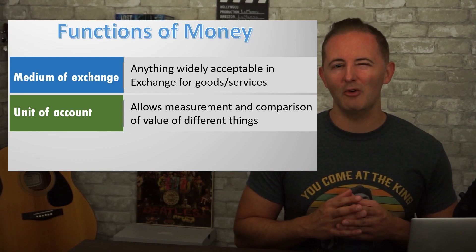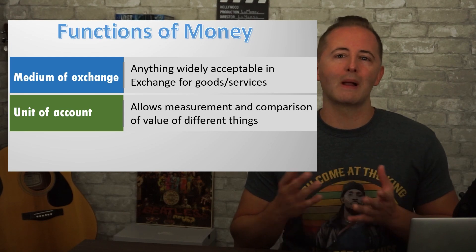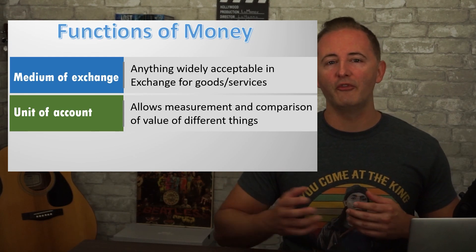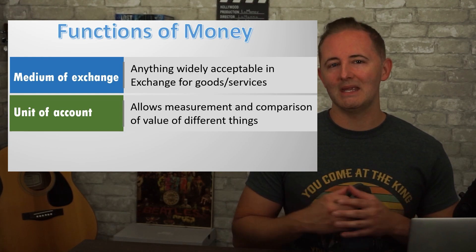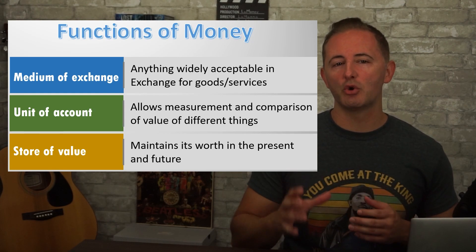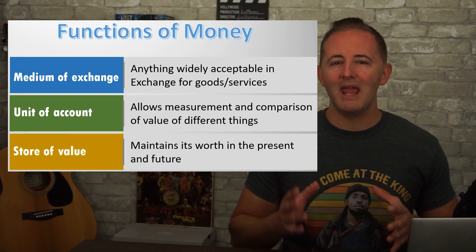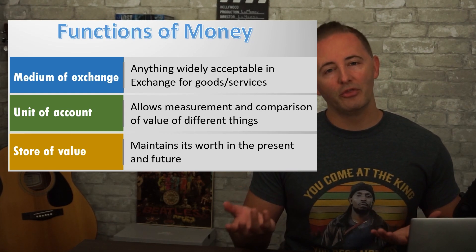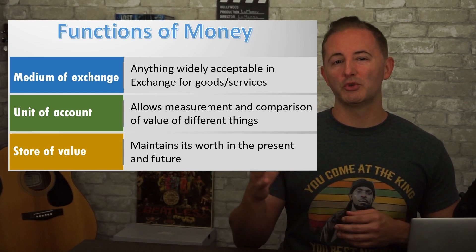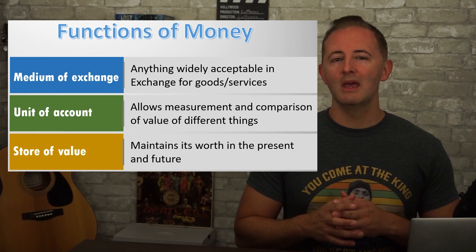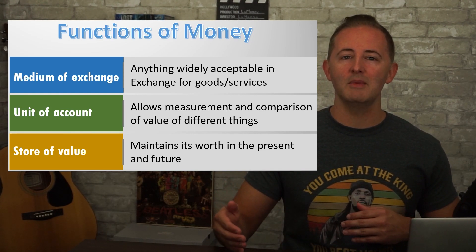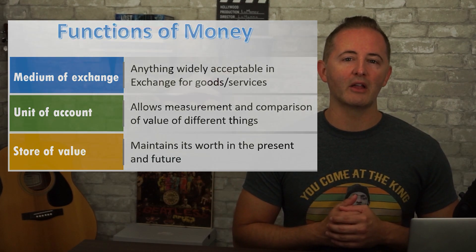Money serves as a unit of account, allowing us to easily compare the relative value of goods, services, and labor. For example, without money it would be very difficult to determine the relative value of a math lesson and two loaves of bread, or an iPhone. But money makes it easy — we just look at the prices. Third, money functions as a store of value, meaning that it maintains its value over time, though inflation limits the effectiveness of this role. On a multiple-choice question about the functions of money, if the example has to do with saving or considering money over time, the answer is most likely store of value.